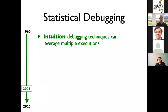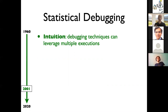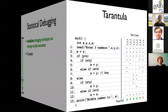The next breakthrough, in 2001, is the idea of statistical debugging. The main intuition was that up to then, people had been using a single failing execution to figure out where the bug is — and there's a wealth of information being left on the table. In particular, we might have multiple failing executions and also multiple passing executions, and we should be able to use this information to find where the bug might be. The first instance was a technique called Tarantula, developed at Georgia Tech.